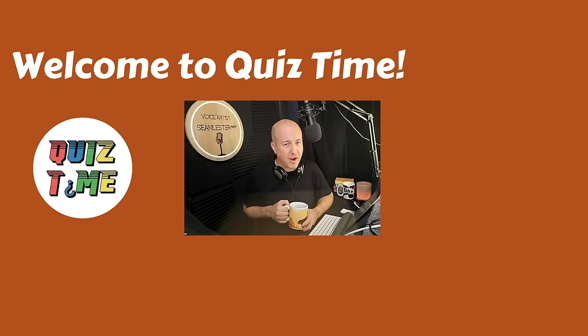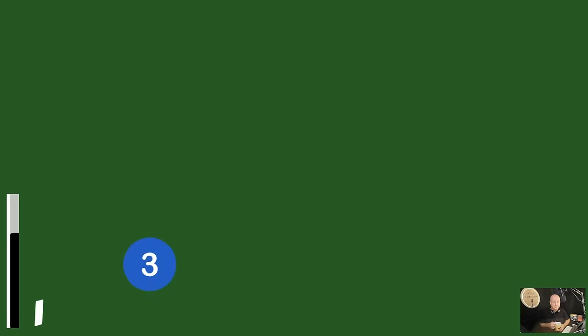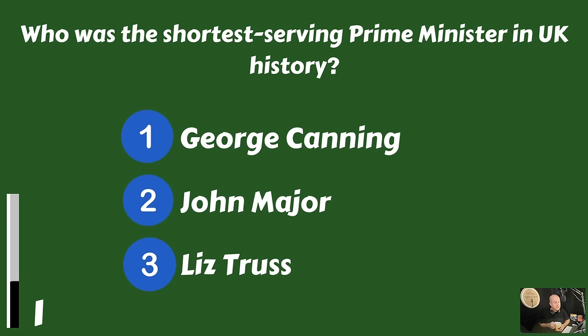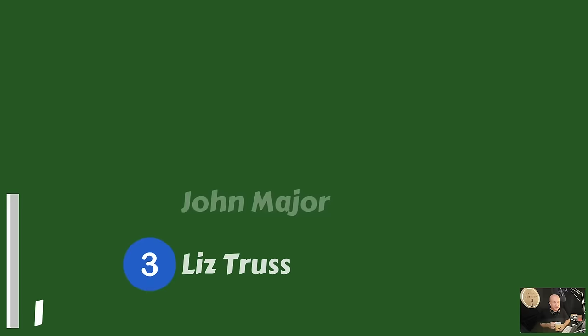Who was the shortest serving prime minister in UK history? Was it George Canning, was it John Major, or was it Liz Truss? The shortest serving prime minister in Great Britain was Liz Truss.